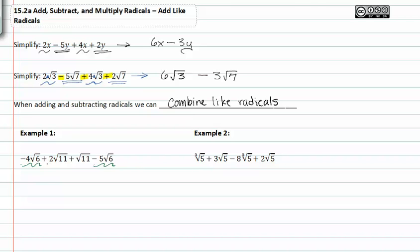Let's go ahead and combine those root 6 terms to get negative 4 plus negative 5 is negative 9 root 6. And positive 2 root 11 plus 1 root 11 is positive 3 root 11.